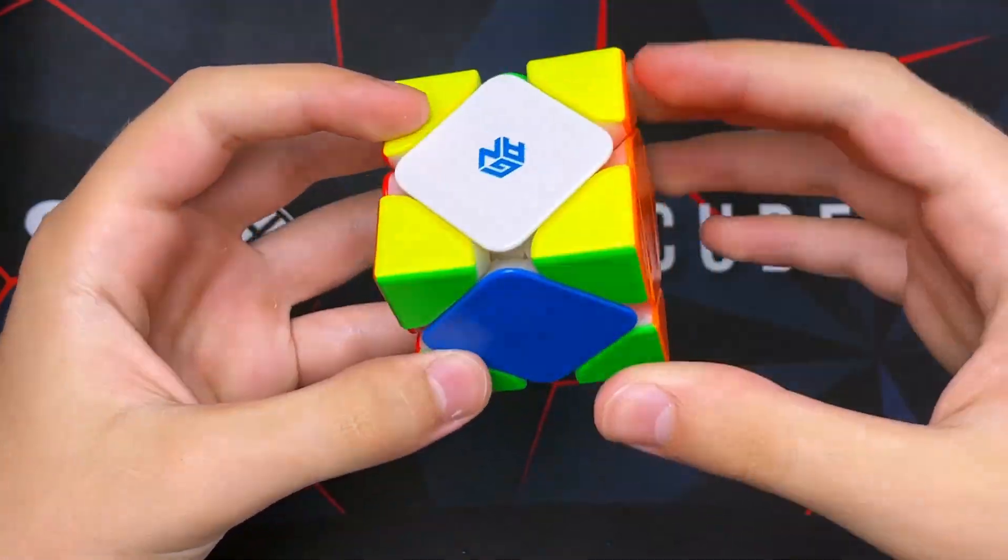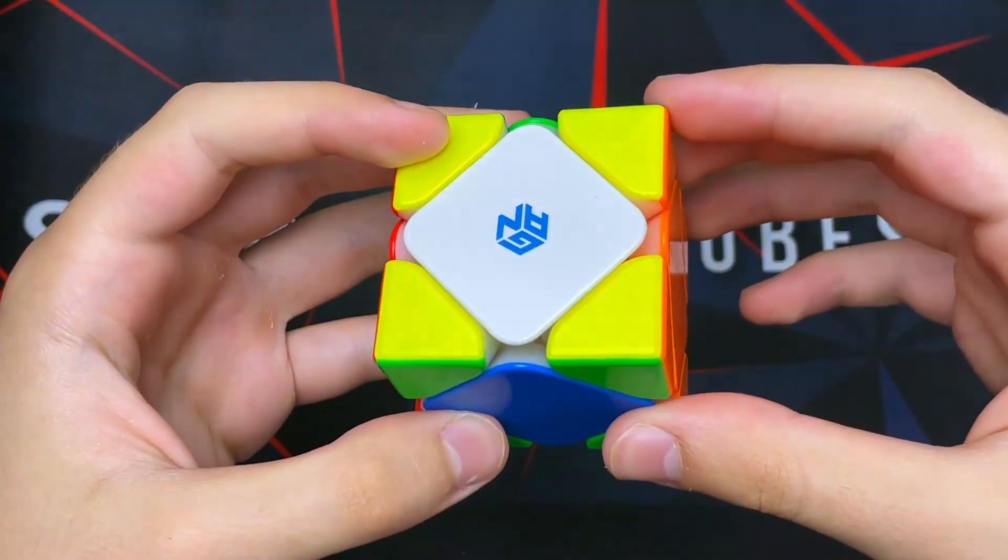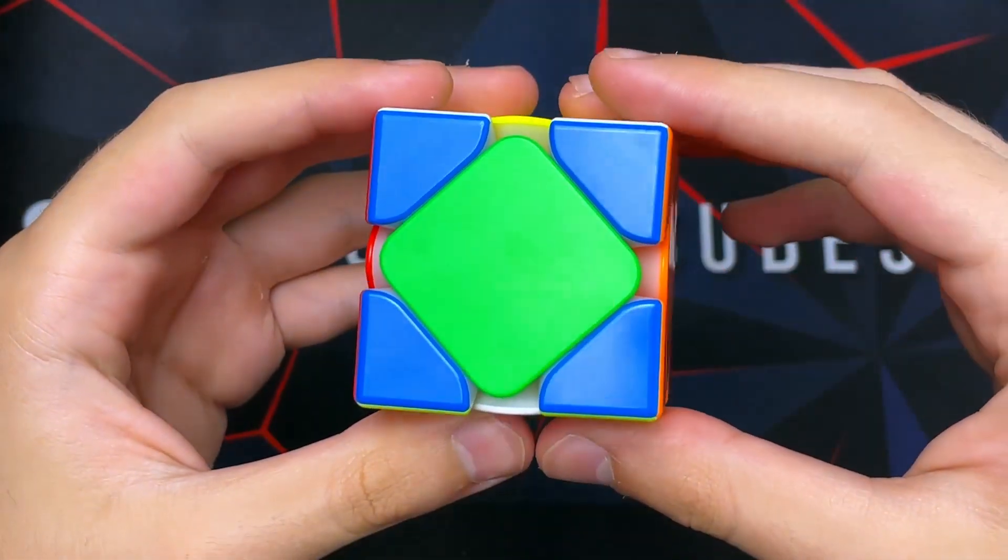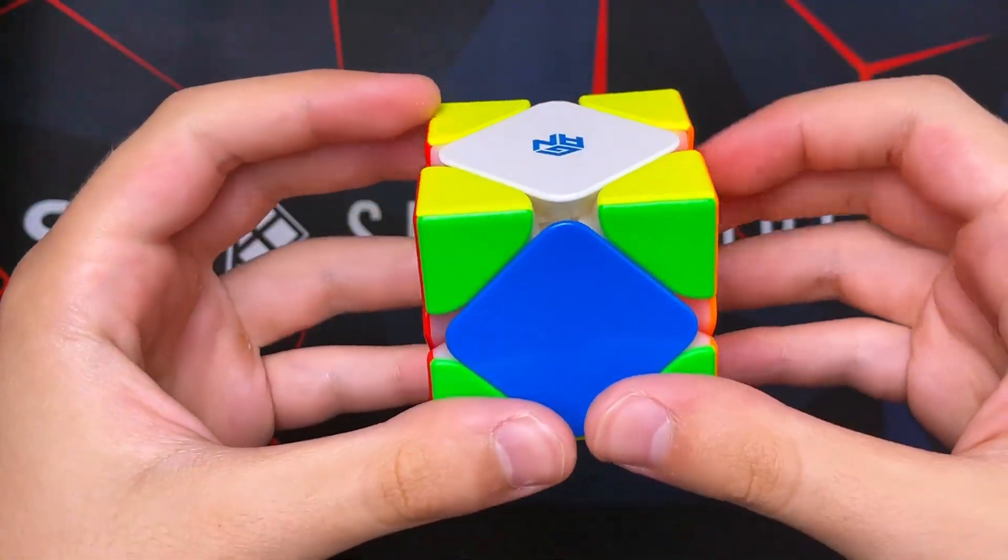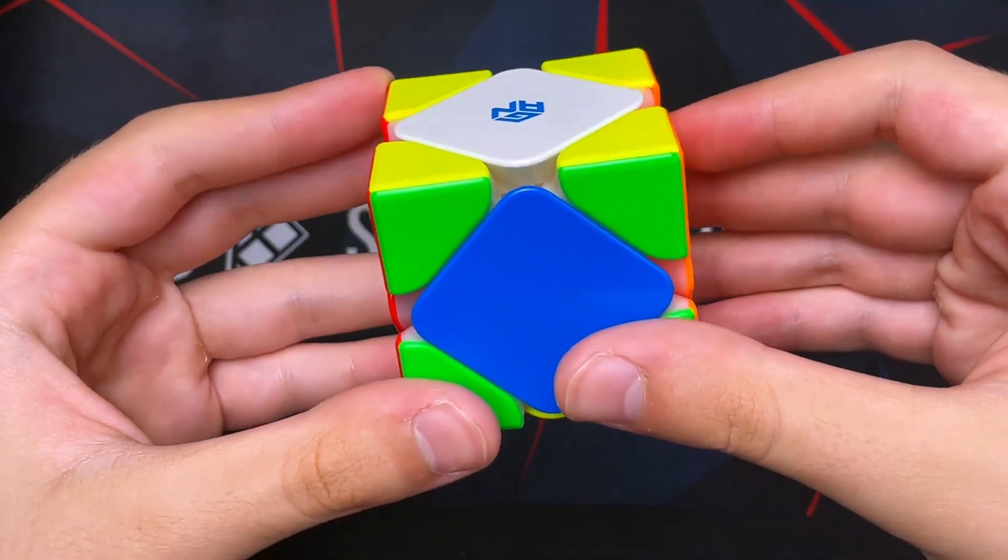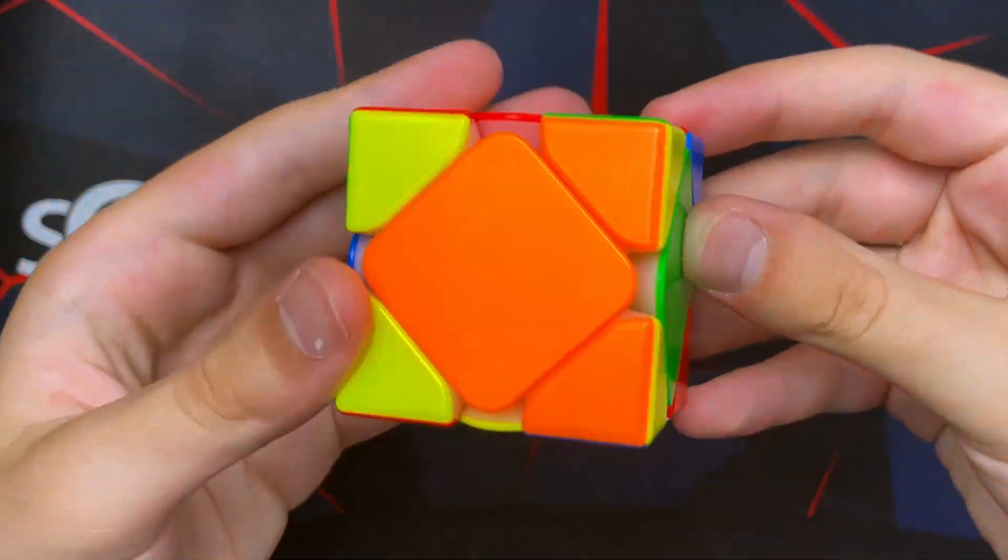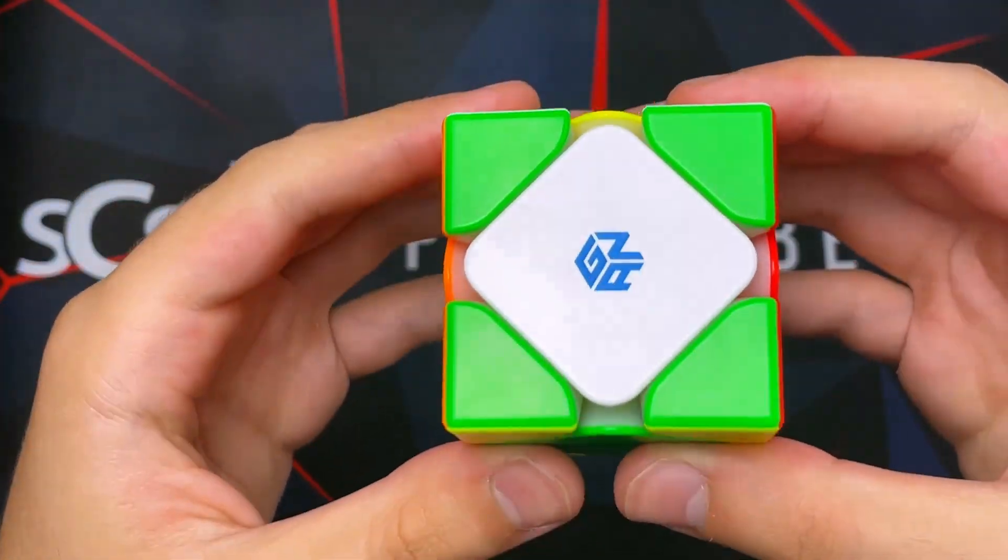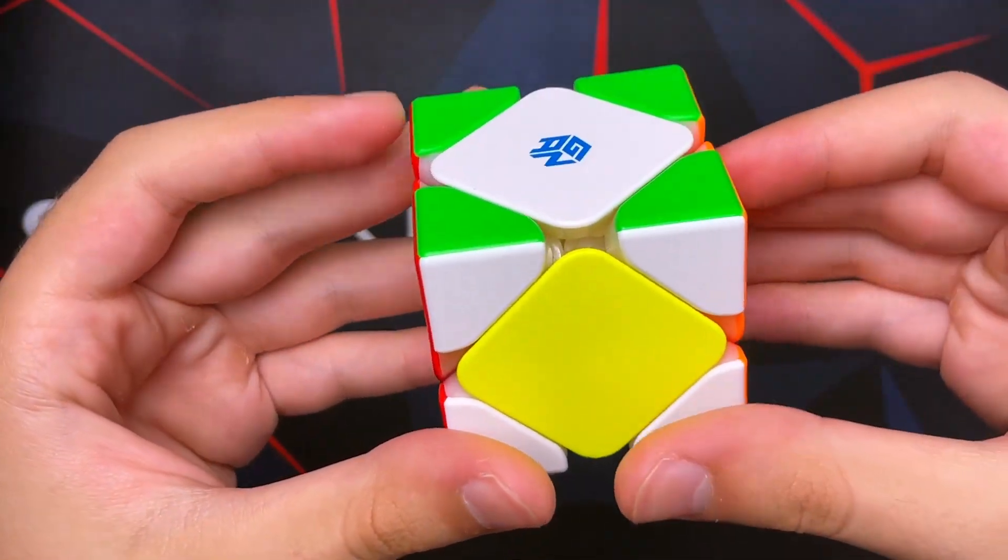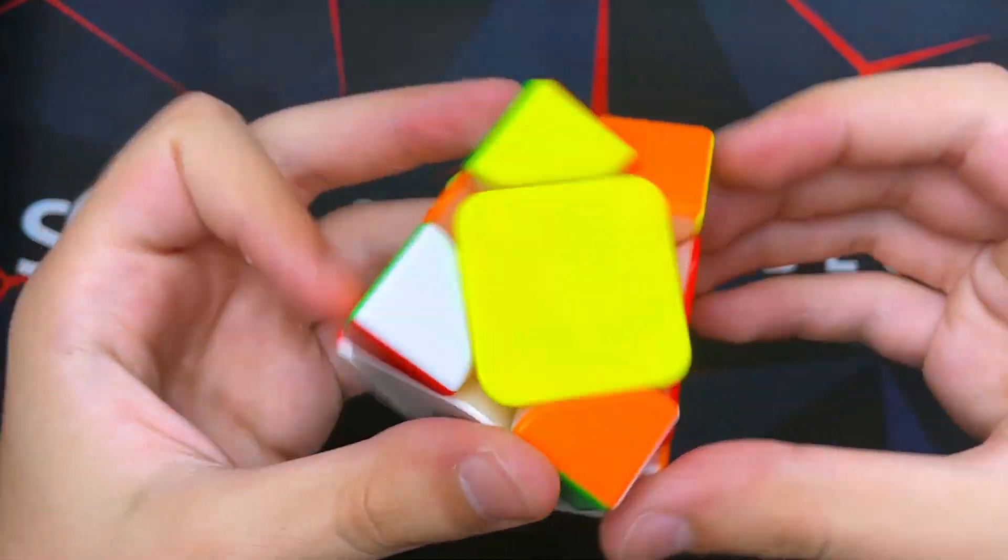Another case that you could get for these last four centers is an H perm essentially. The way that you solve an H perm is the same thing that you do with a Z perm. You just do the alg from any angle and then you'll get a U perm. So now you solve this like this.